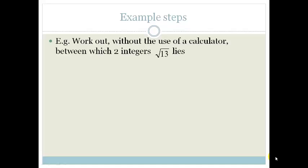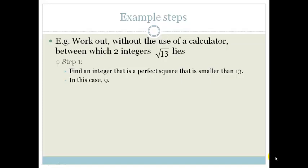A typical example would be: work out, without the use of a calculator, between which two integers root 13 lies. Step one, we need to find an integer that is a perfect square that is smaller than 13. In this case, 9.